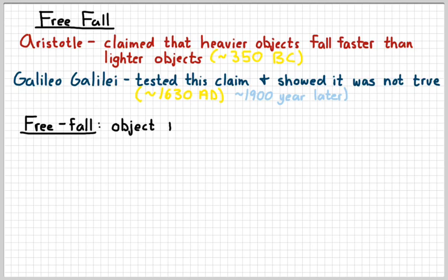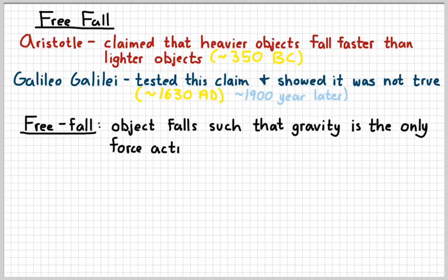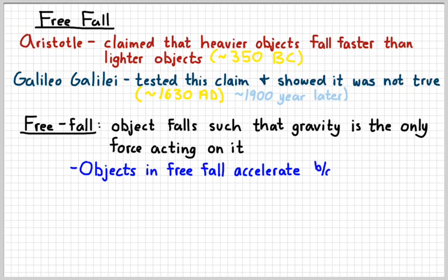So free fall refers to an object that's falling such that gravity is the only force that is acting on it. So when things are free falling, gravity is the only thing affecting them. In other words, objects in free fall accelerate because of gravity. And we're going to learn a lot more about gravity as we progress through the year.